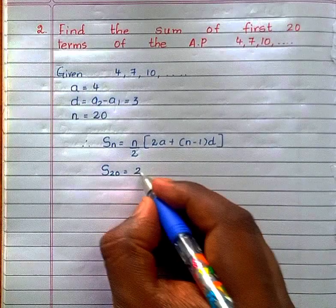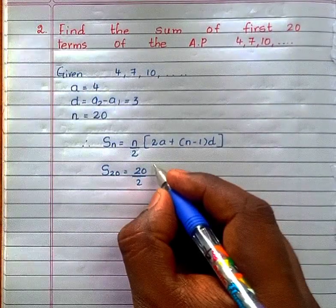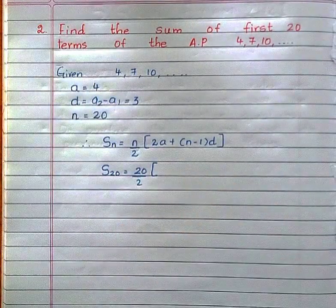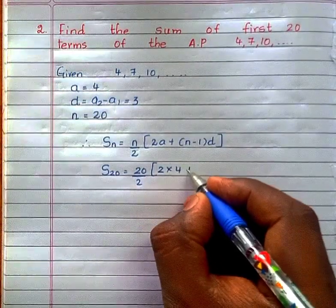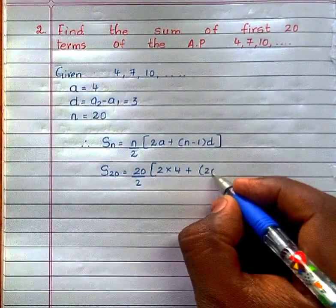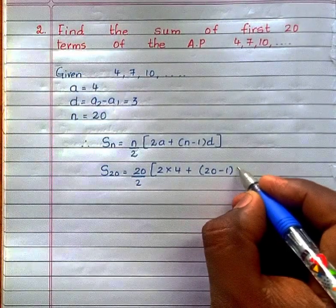Now, substitute value of a, d and n. That is S₂₀ = 20/2 × [2 × 4 + (20-1) × 3]. What is the value of n? That is 20 - 1 into d is 3.